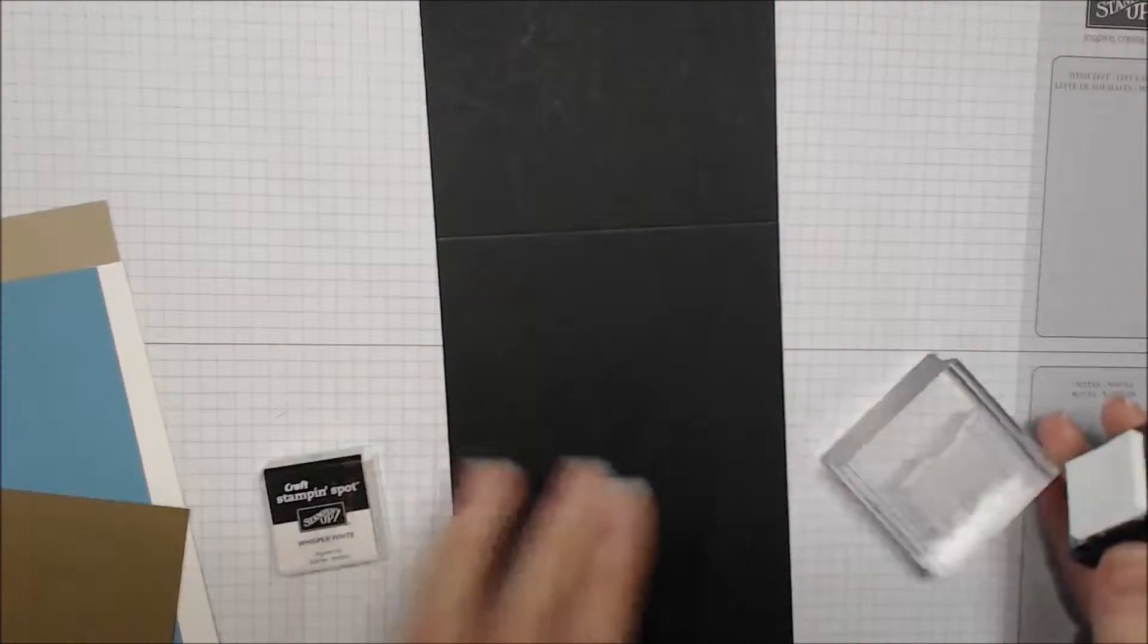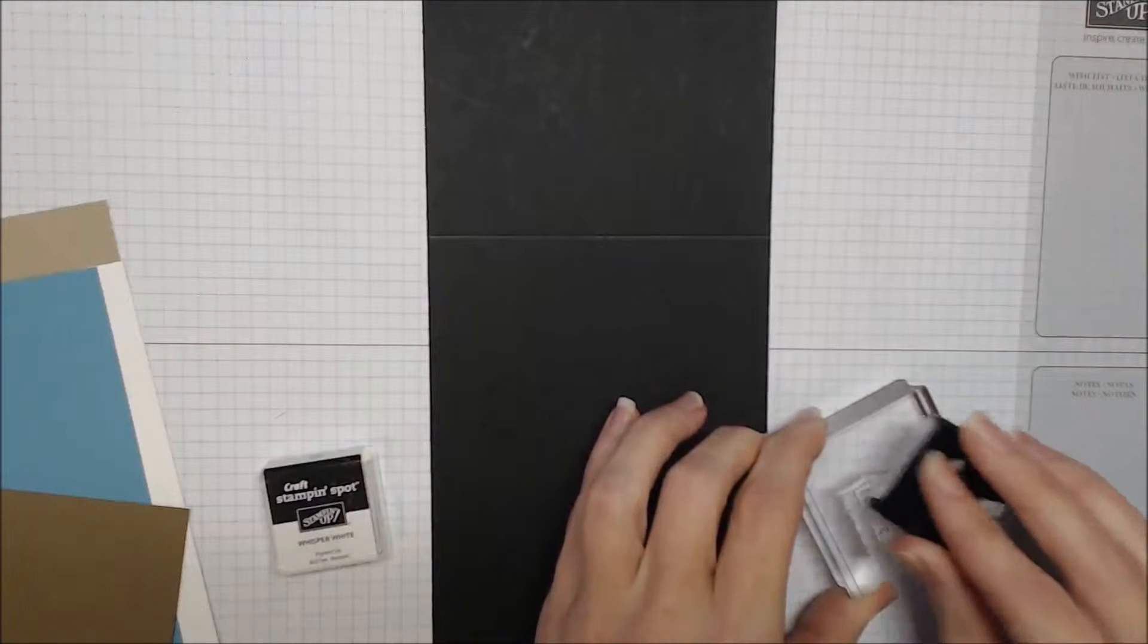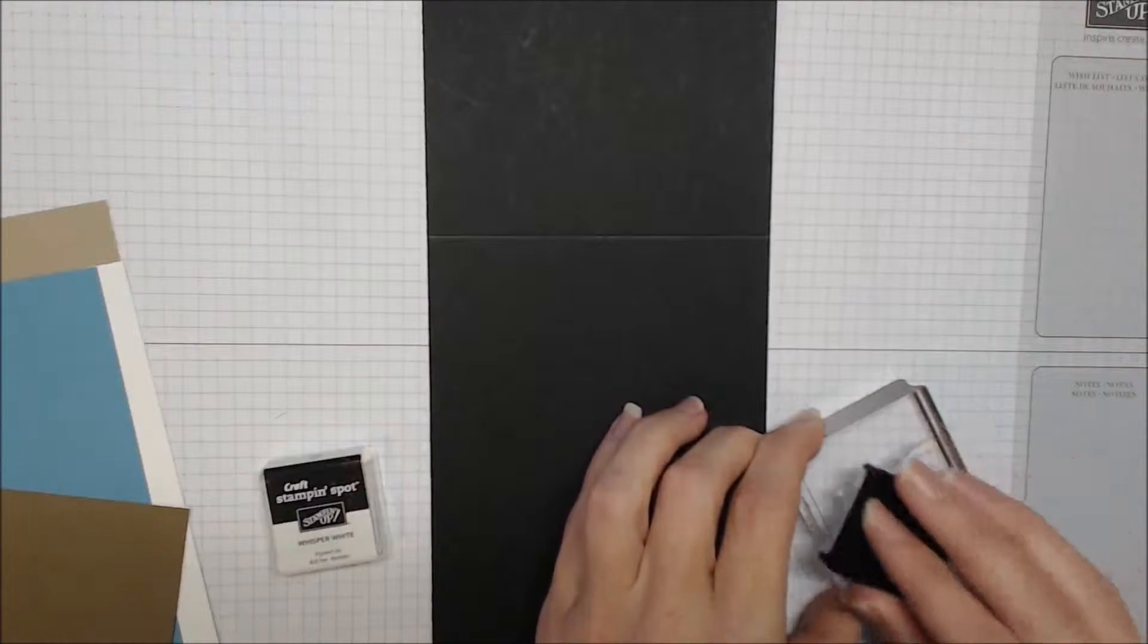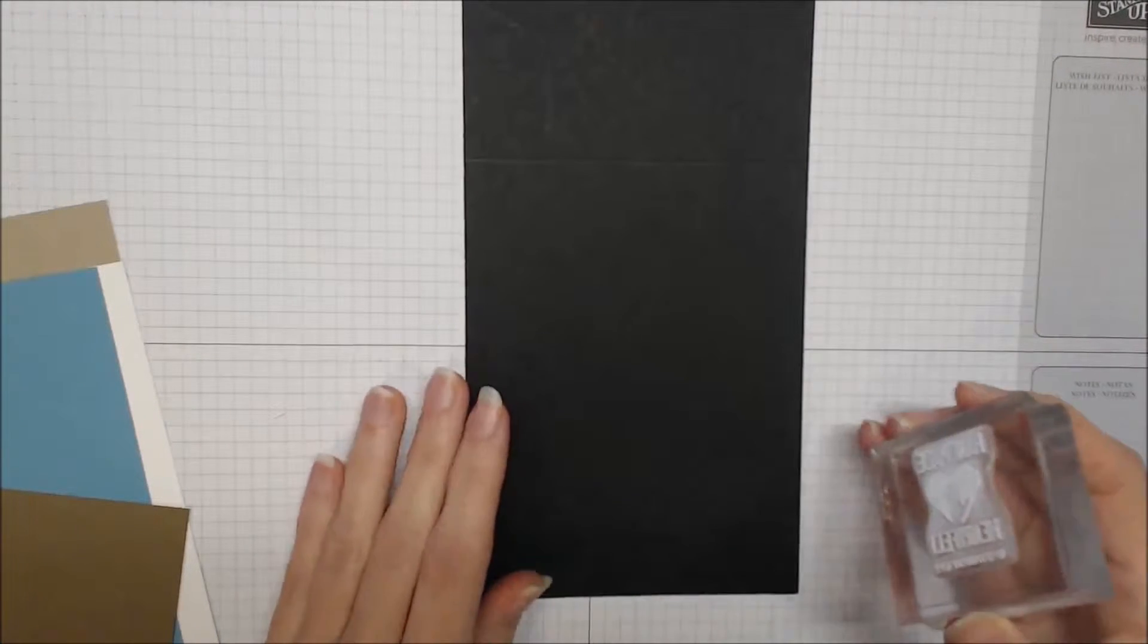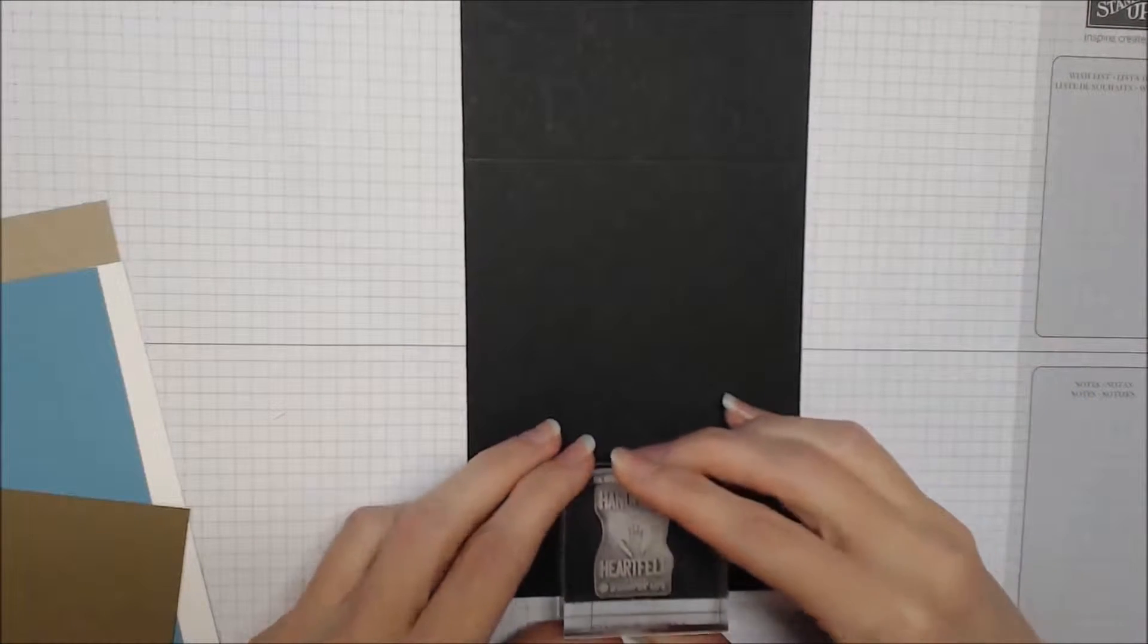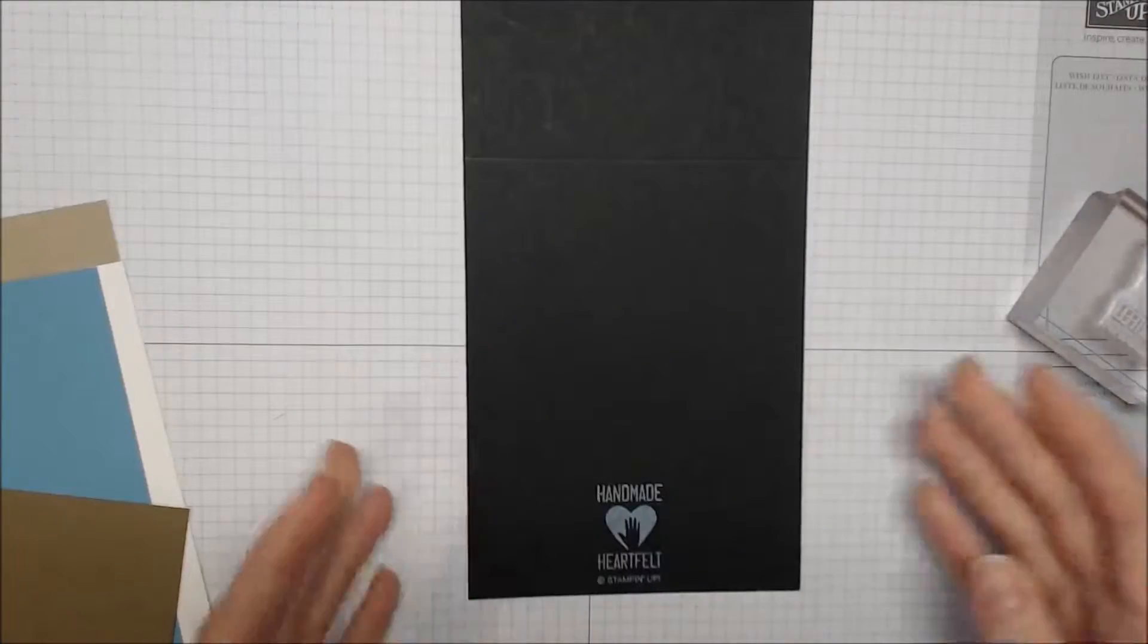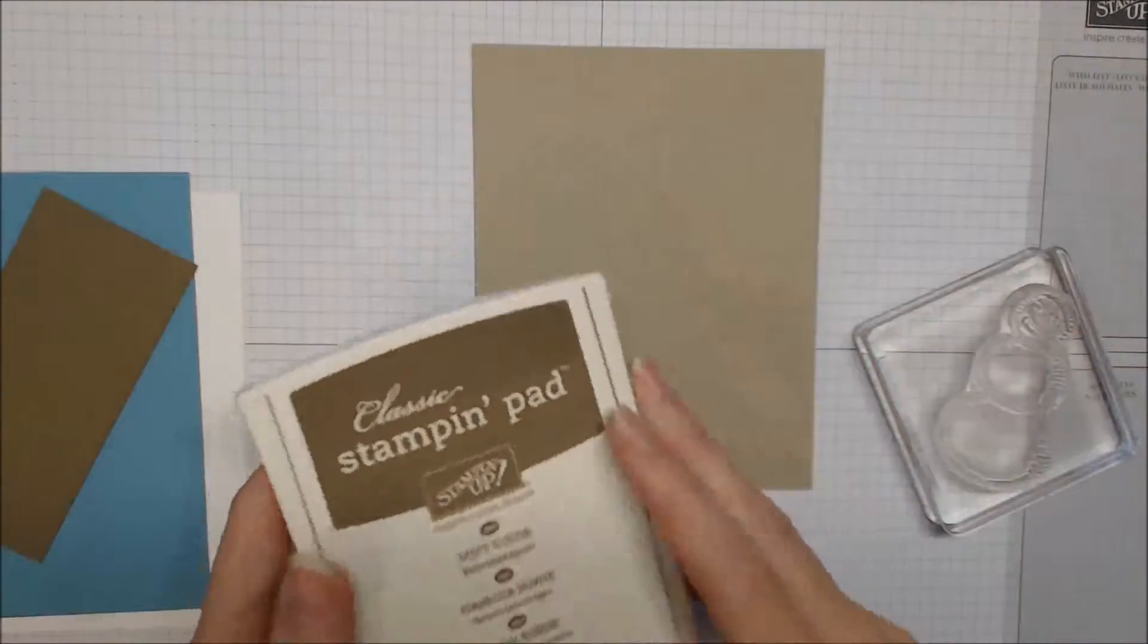The first thing we're going to do is stamp the Handmade Heartfelt Image from Better Than Email Stamp Set using Whisper White Craft Ink onto the card base. This is 4¼ by 11 inches, scored at 5½, so that is the top folding card.